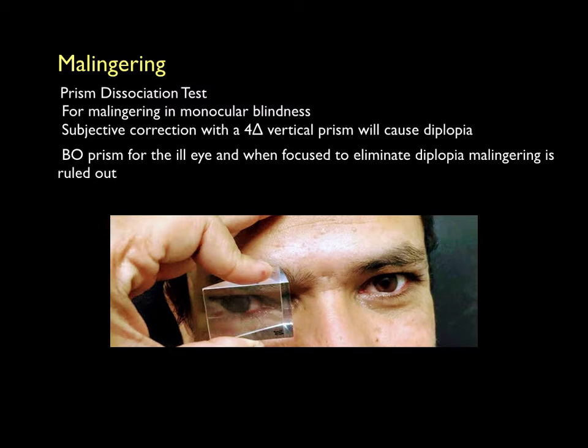Another test uses a high-value base-out prism. When it is placed in front of one eye, a normal person will voluntarily move the eye inward to fuse the two images, whereas a truly blind eye will not move.